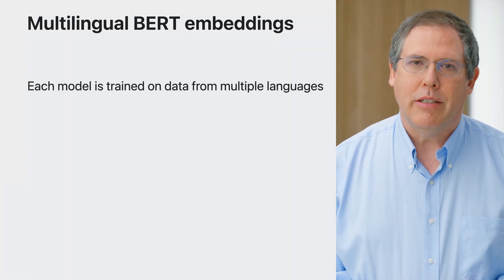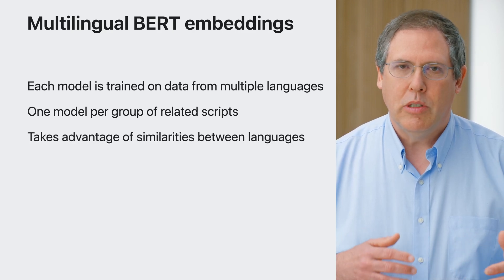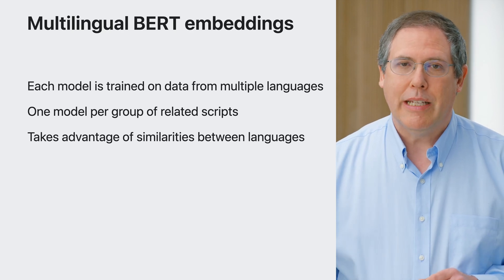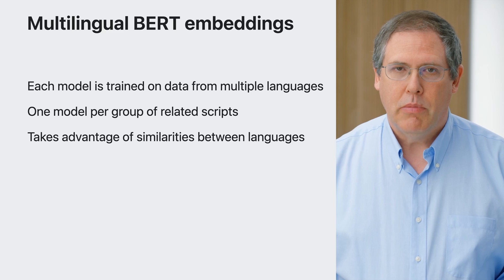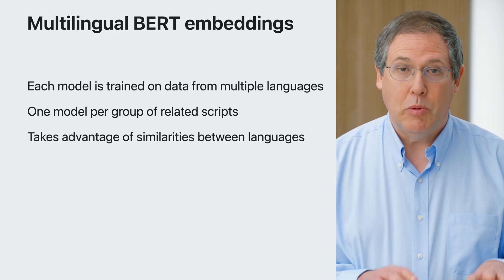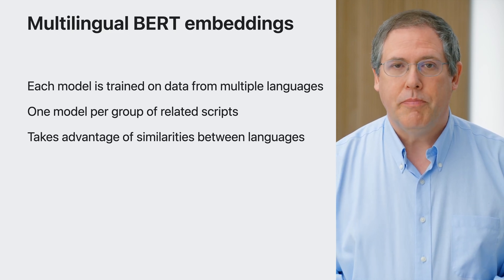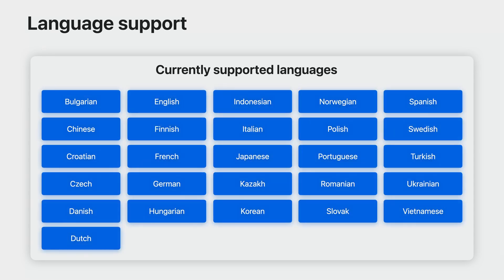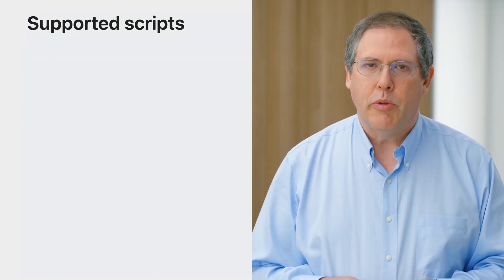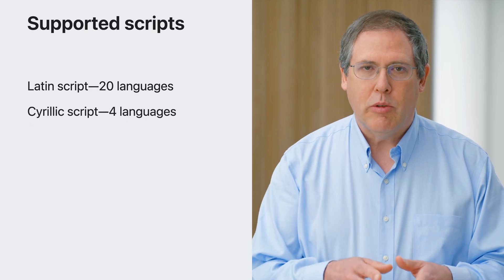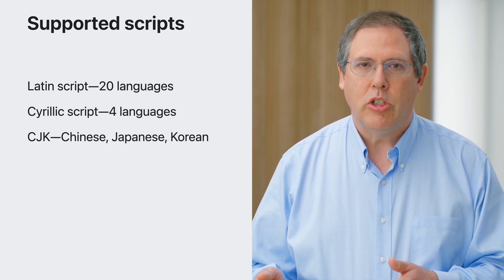This model is so powerful that it can be trained on multiple languages at once, leading to a multilingual model. This makes it possible to support many languages immediately, and even multiple languages at once. Because of similarities between languages, there's some synergy such that data for one language helps with others. We support 27 different languages across a wide variety of language families, done with three separate models — one each for groups of languages that share related writing systems: one model for Latin script languages, one for Cyrillic, and one for Chinese, Japanese, and Korean.